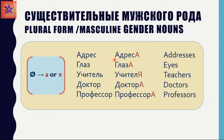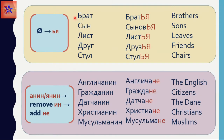Адрес becomes Адреса, глаз would be глаза, учитель becomes Учителя — you see the Я sound is added to the soft letter, which in this case is Л. Доктор becomes Доктора, and Профессор would be Профессора.